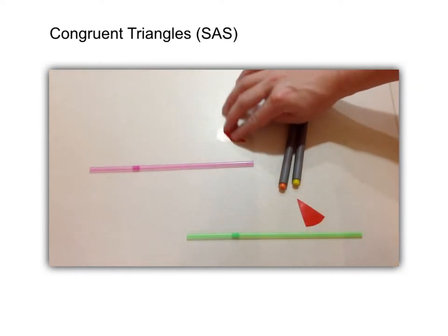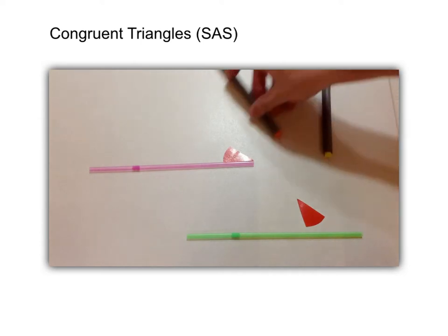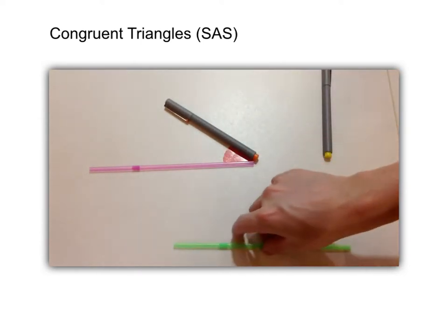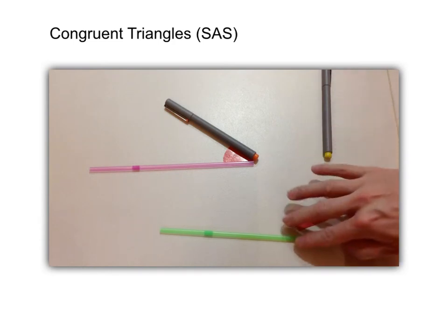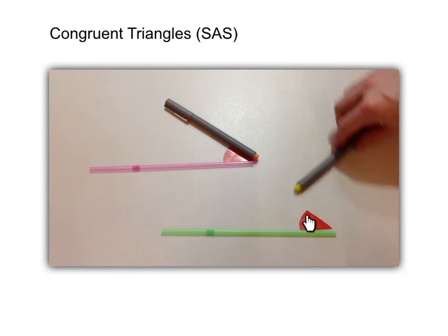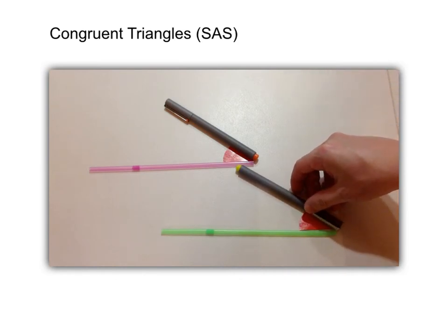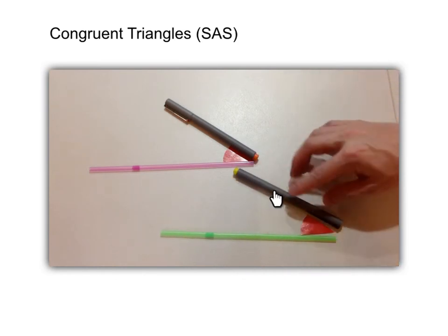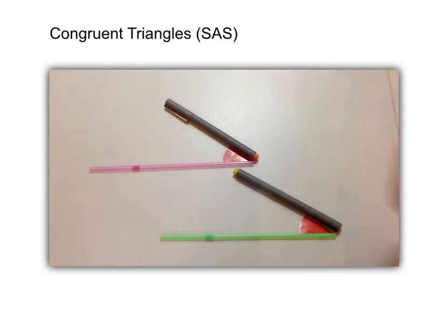As you can see, this is the first pair of equal sides. This is the first S. This will be the angle, the pair of equal angles. And this pair of sides will be the last S.